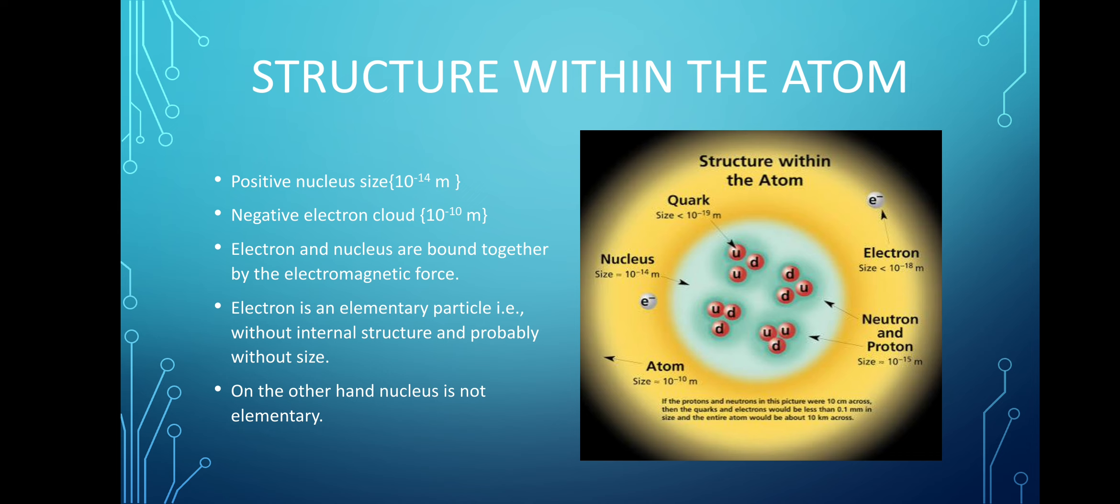Now, nucleus is positively charged and is extremely small, of the size 10 to the power minus 14 meters. The surrounding electron cloud is negatively charged, of the size 10 to the power minus 10 meters. The nucleus and the electron are bound together by the electromagnetic force.